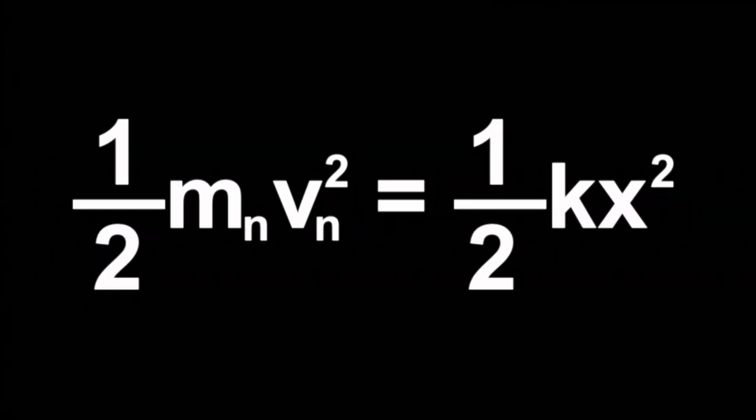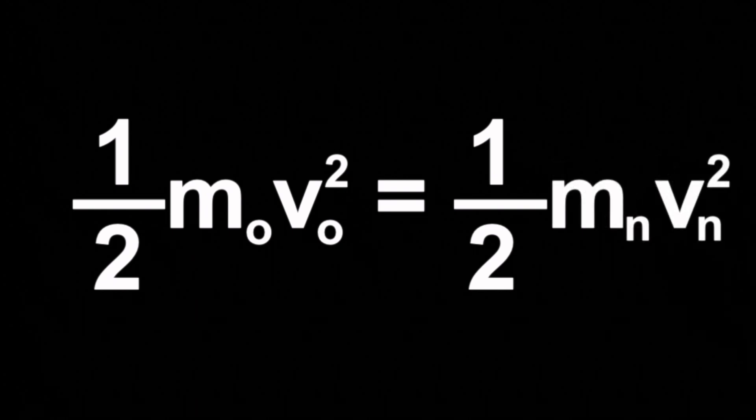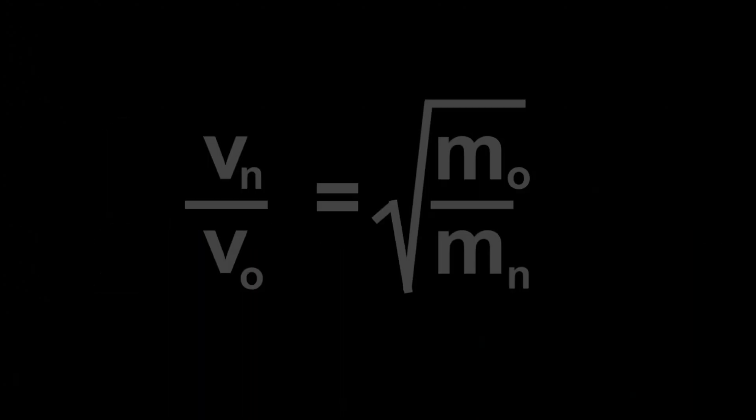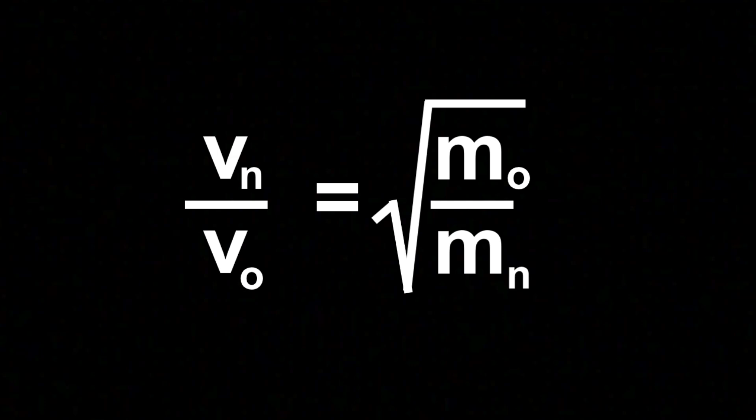So what we want to do from here is say, well, hey, if one half times the mass of the new design times the velocity of the new design squared is one half kx squared. And one half times the mass of the old design times velocity old design squared is also one half kx squared. Well, then they're going to equal each other, won't they? And indeed they do. If you rearrange this a little bit, you'll see that the ratio of their velocities is equal to the square root of the ratio of their masses, only flipped upside down.